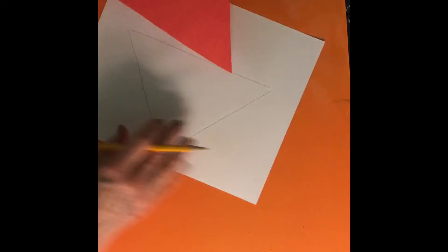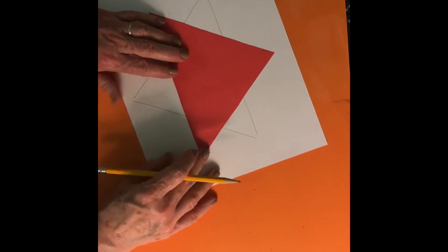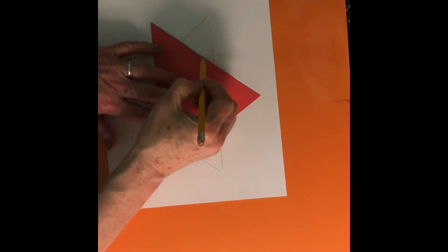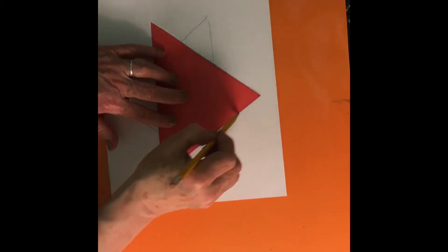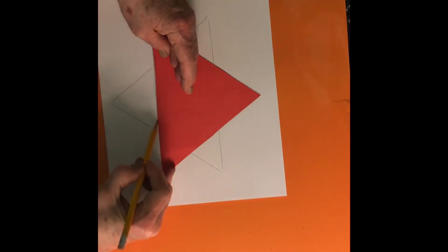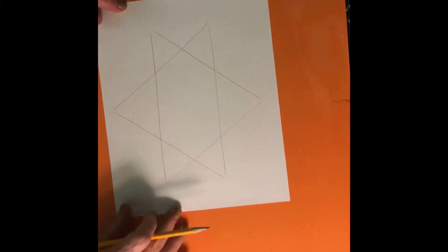Turn my paper around, put the triangle the opposite way, and trace around it, and we have a six-point star, which is going to be our color star.